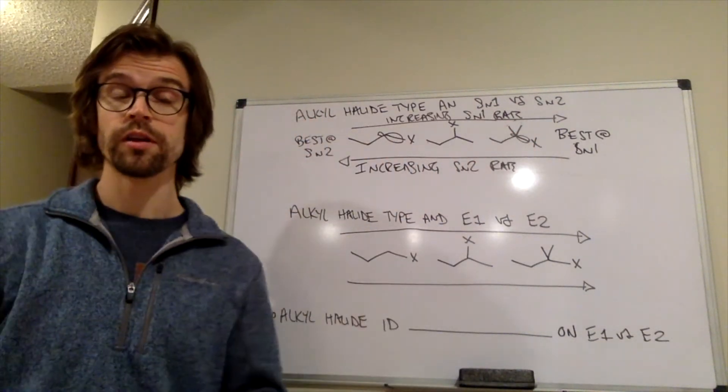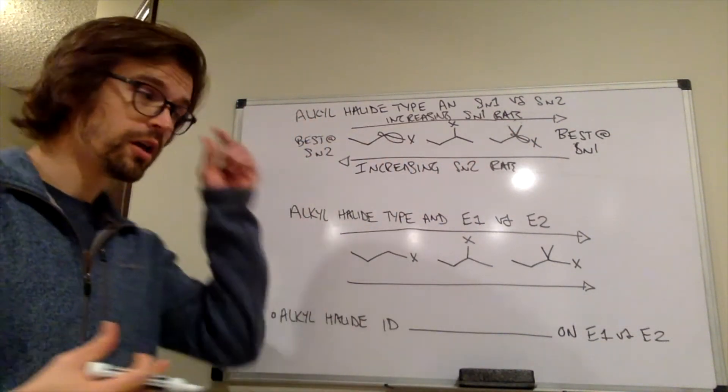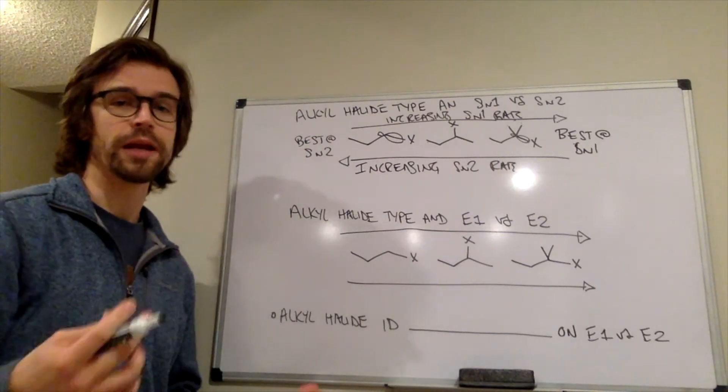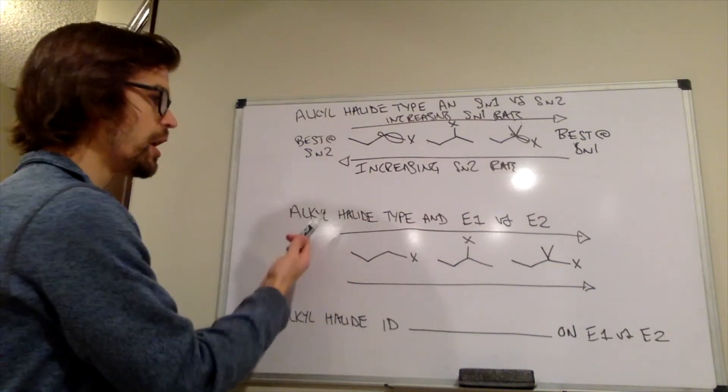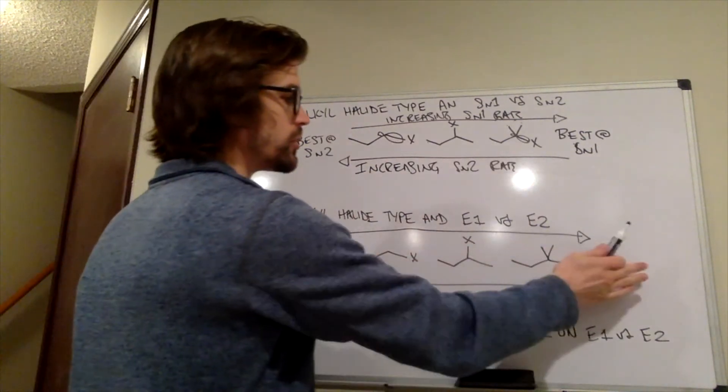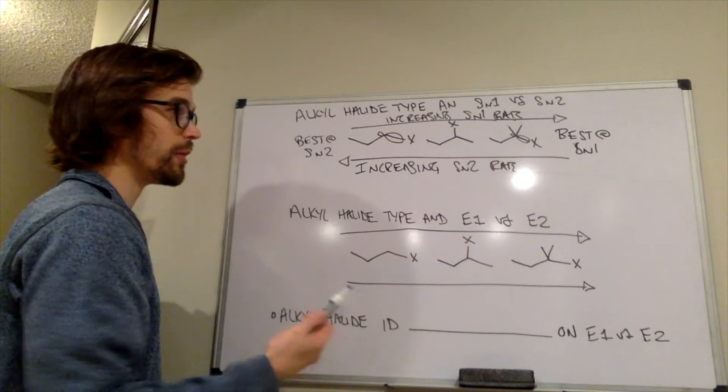So that's how it works with substitution. But something's a little bit different with elimination. We already see that, right? We had one arrow going this way, one arrow going that way with substitution. But with elimination, both arrows are going this way. And when we think about rate of E1,